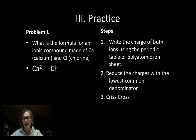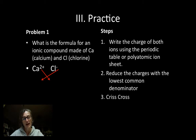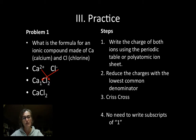Next, I crisscross. The oxidation number of my anion becomes the subscript of my cation, and the charge of my cation becomes the subscript of my anion, giving me Ca₁Cl₂. Since I don't need to write the subscript of one, the final formula is CaCl₂ — calcium chloride.